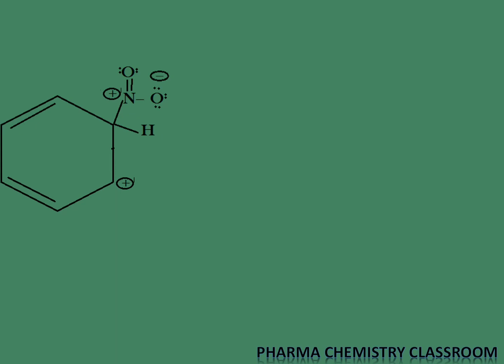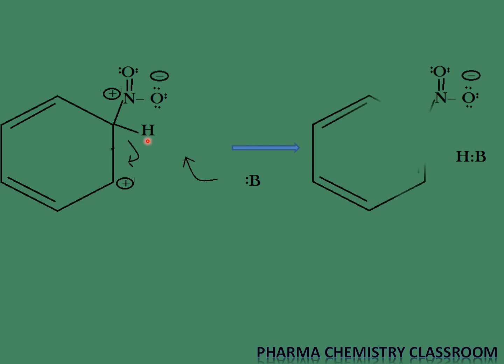In the next step, the formed carbocation loses the proton from the sp3 hybridized carbon. A base from the system abstracts the proton — the base B is a general representation and can differ depending on the solvent used. The base abstracts the proton, leaving its electrons on the carbon, and we get HB, the protonated base, along with our substituted aromatic ring — nitrobenzene — as the final product.